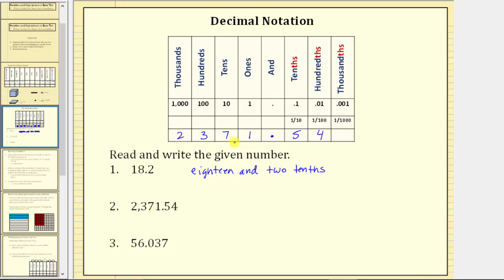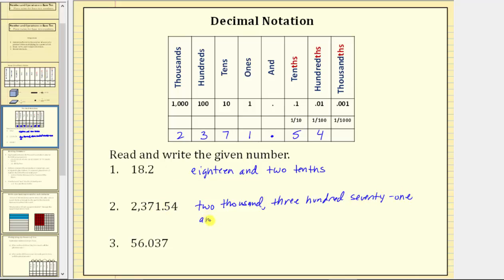We also hyphenate 71 and 54 when writing the number. To write this out, we have 2,371, and we hyphenate 71, and 54 hundredths with 54 hyphenated.